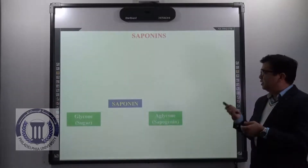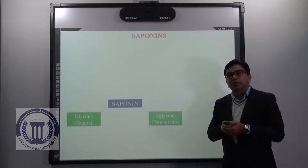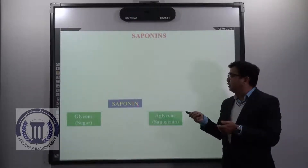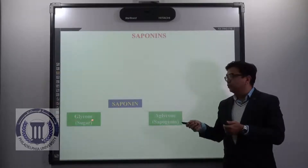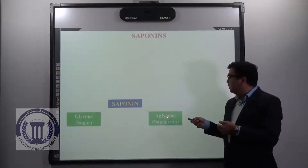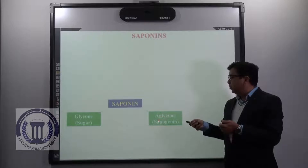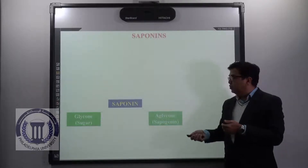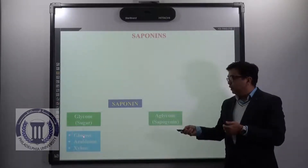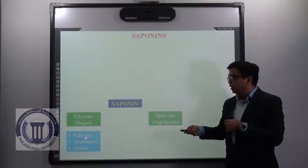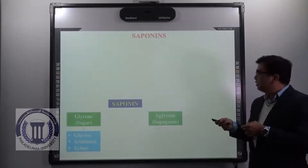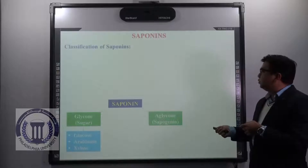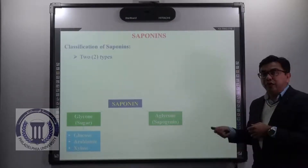So coming to the classification — in our last lecture we have seen that saponins are the glycosides which upon hydrolysis give the sugar part that is known as glycon, and the non-sugar part which is known as aglycon or sapogenin. Sugar can be of any type like glucose, arabinose or xylose. Now saponins are mainly classified based on the chemical structure of sapogenin, that is the aglycon, into 2 types.